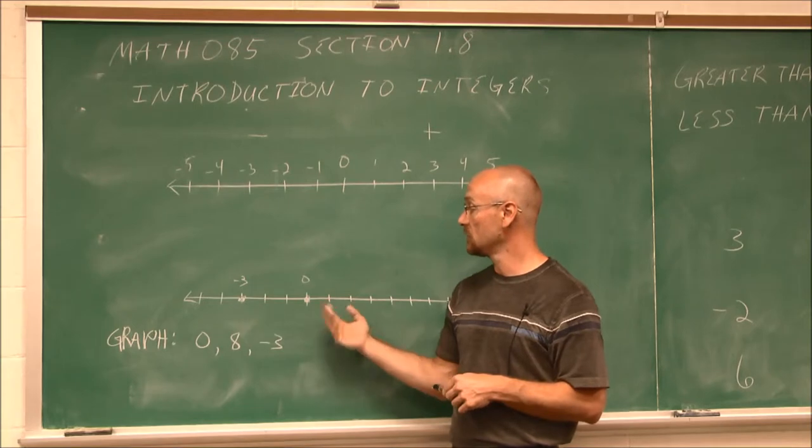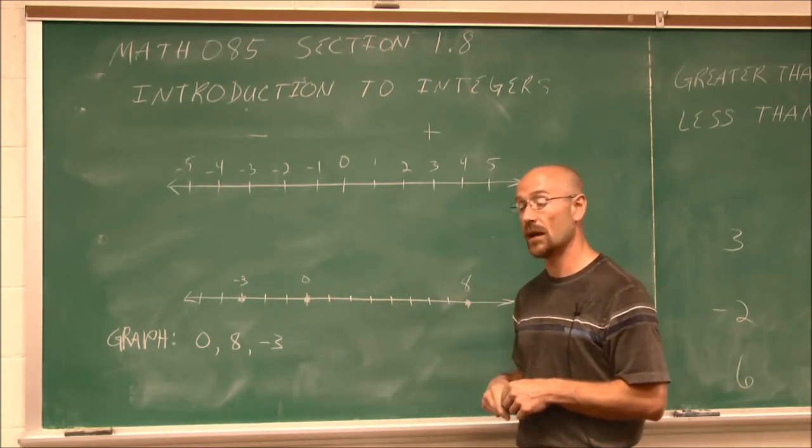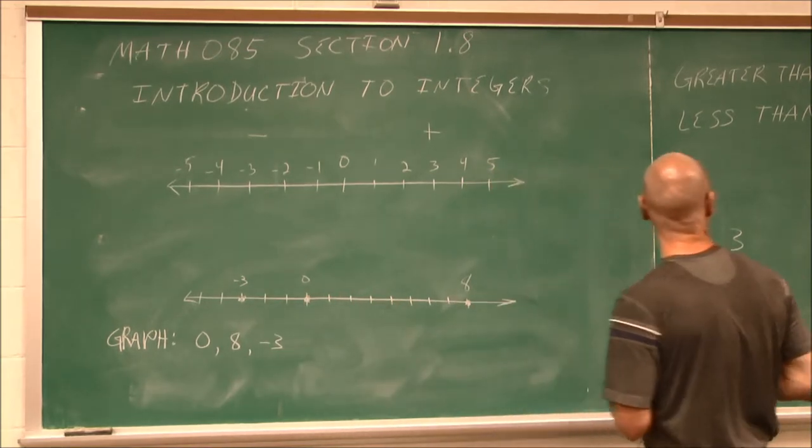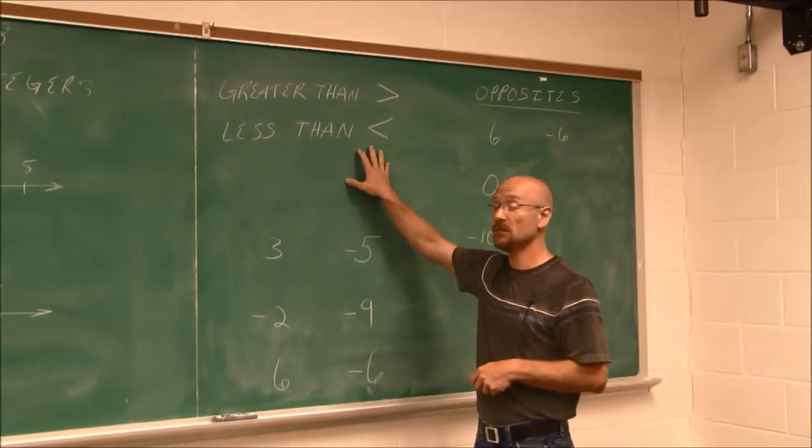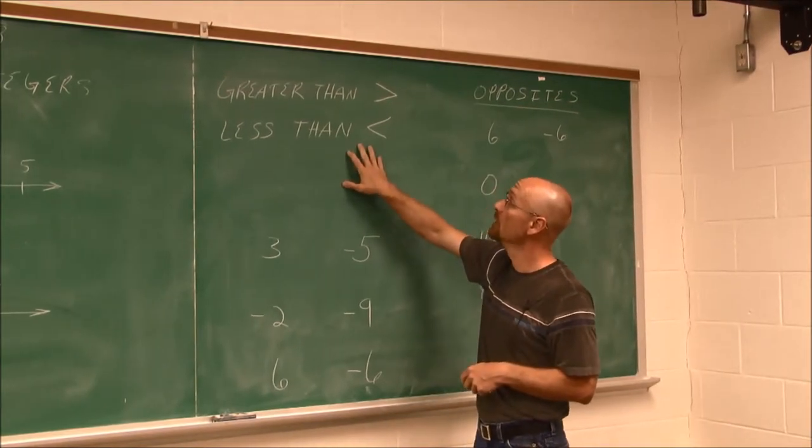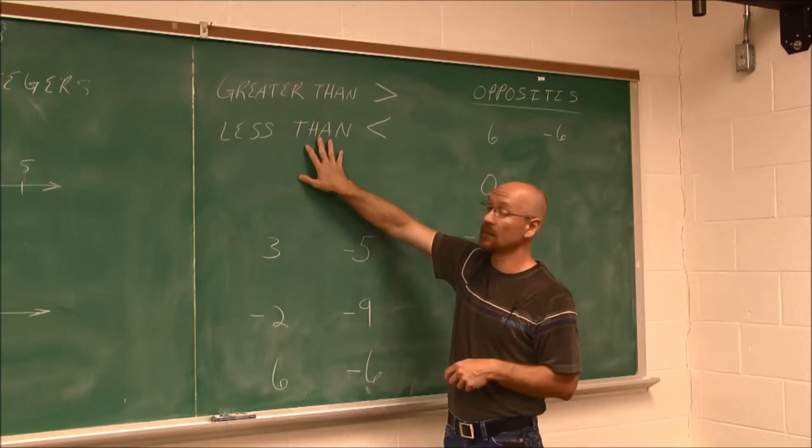Negative values are to the left of 0. Positive values are to the right. Let's move on to another concept. Hopefully we've seen this before.